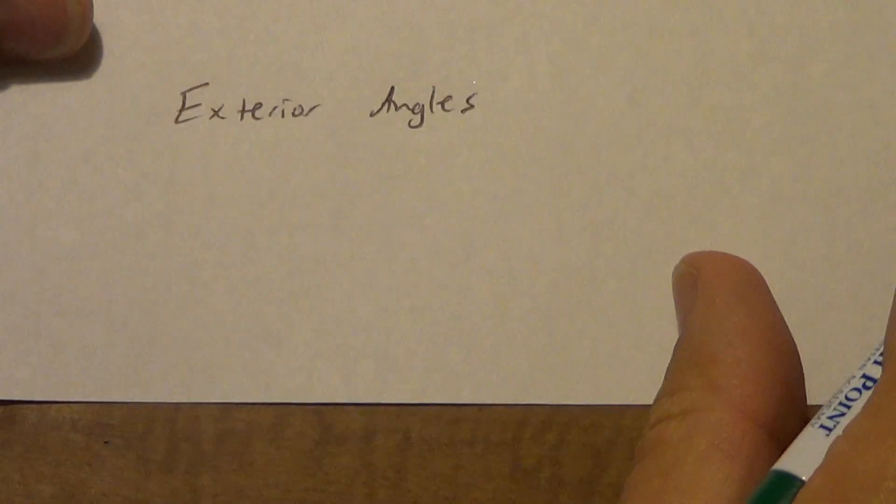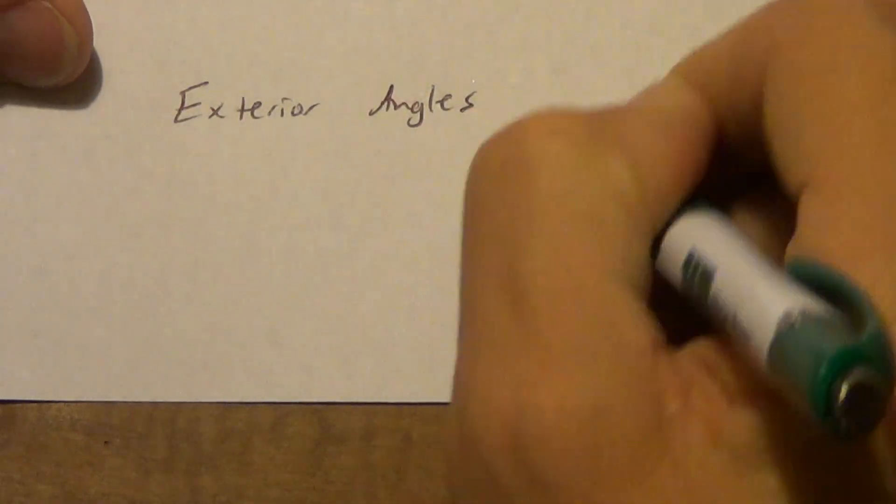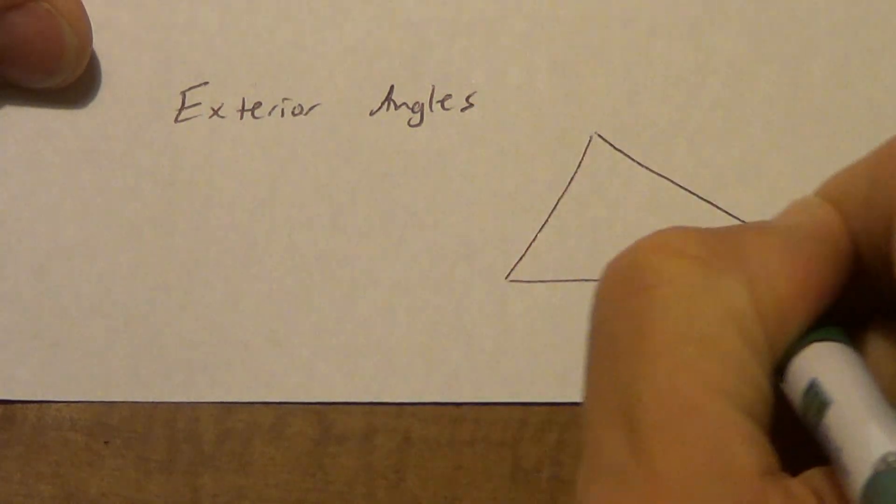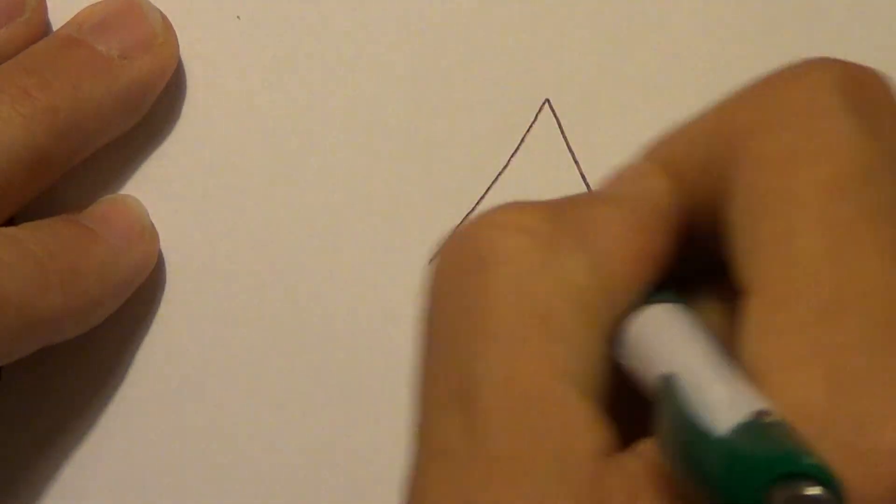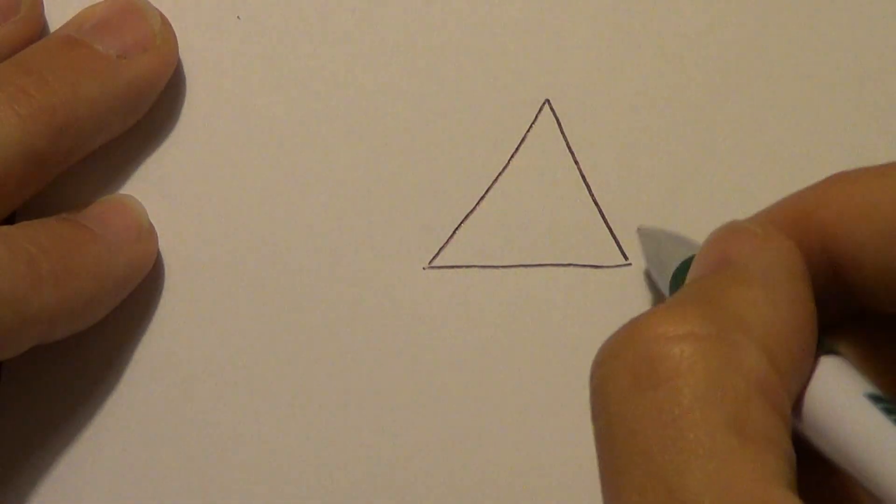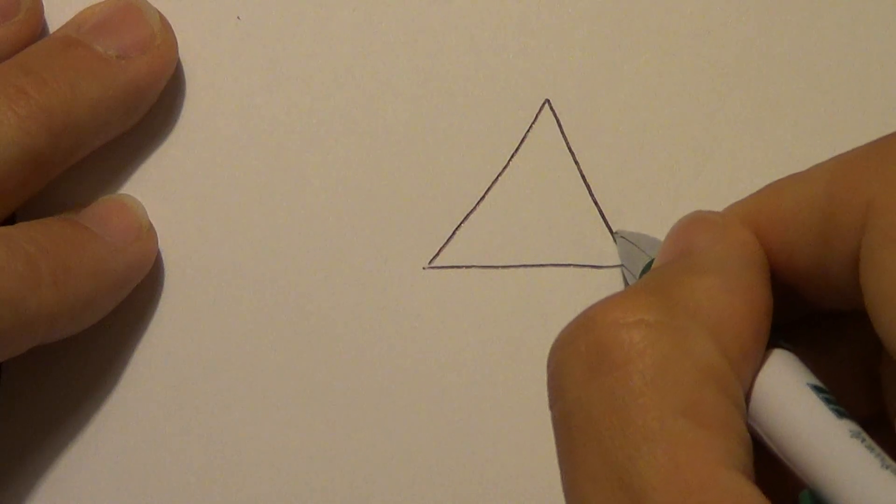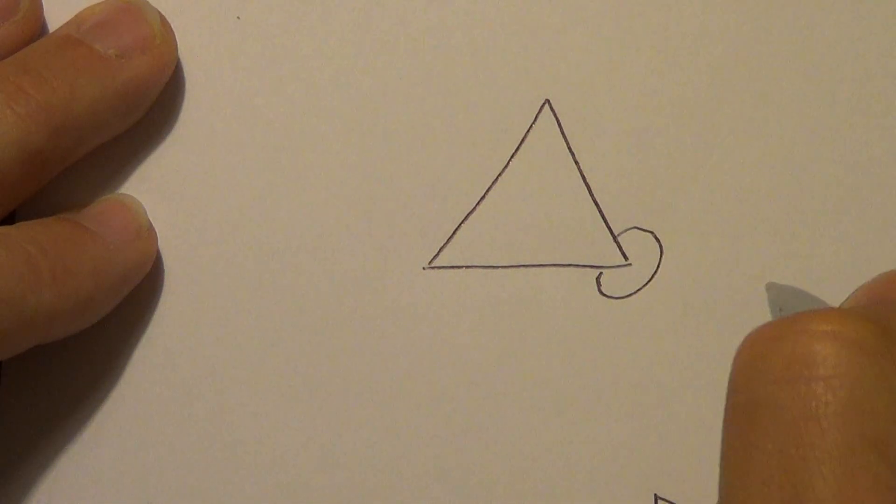Okay. Now an exterior angle. This one can get a little more confusing. It is not. Let me show you what it's not on this other sheet of paper real quick. Okay. So it is not this. Okay. Remember, an interior angle is this little piece. An exterior angle is not all of this. Okay. That is not an exterior angle.